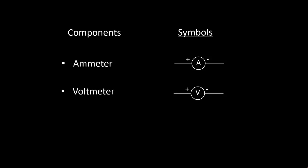Next component is a voltmeter. A voltmeter is an instrument used for measuring electric potential difference between two points in an electric circuit. The voltmeter is always connected in parallel across the points between which the potential difference is to be measured.